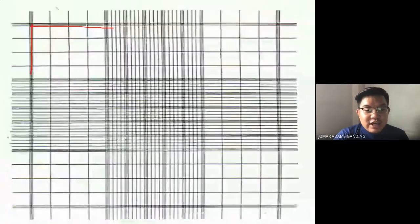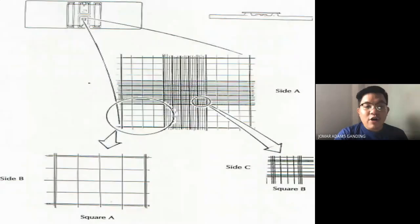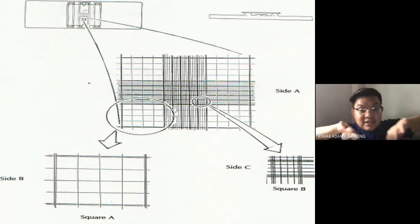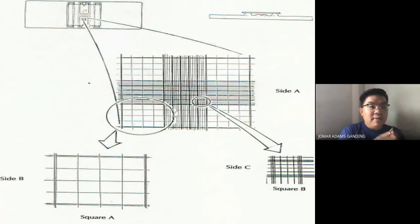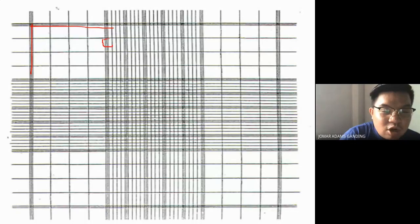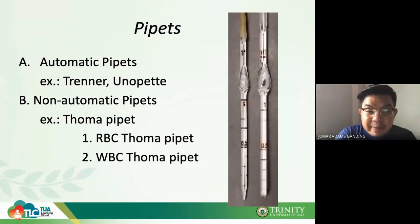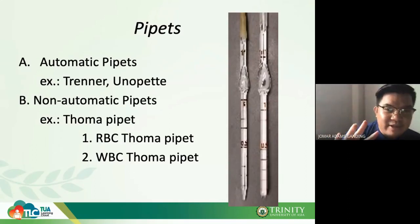The measurements I've placed in your chat box are the important ones to remember. When you look at the Neubauer chamber, you can see the grid lines macroscopically but they are very minor. When a cell overlaps a line, it is still included in the count.